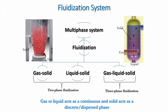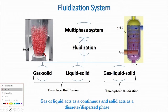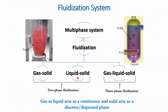Fluidization basically occurs in two-phase systems and three-phase systems. Two-phase fluidization means gas-solid combination and liquid-solid combination. Gas comes in contact with solids with applications such as gas-solid reactions, adsorption, absorption, etc. Similarly, liquid comes in contact with solid. In three-phase fluidization, gas, liquid, and solids — all three phases — come in contact.